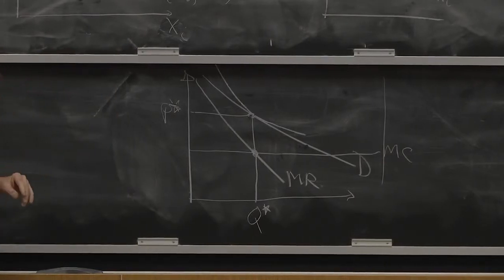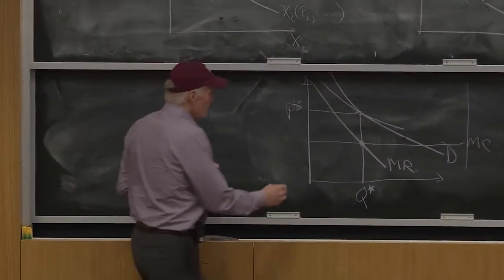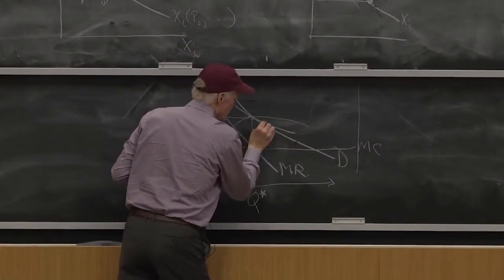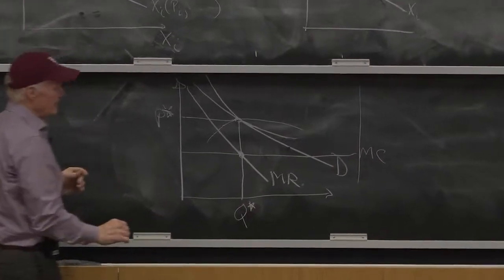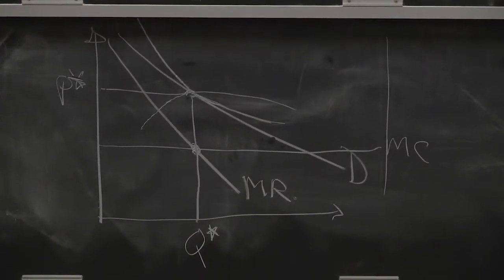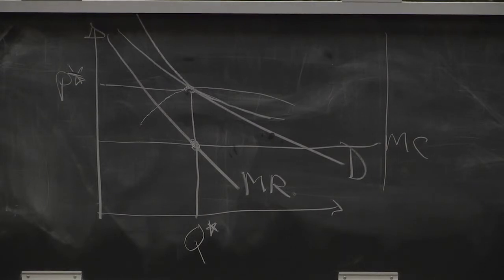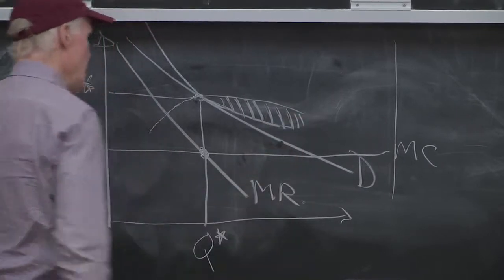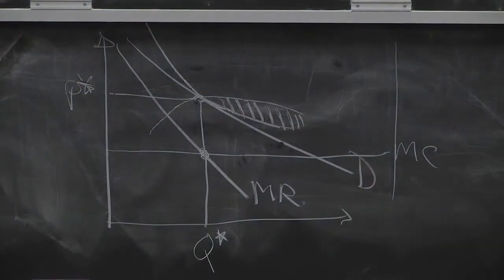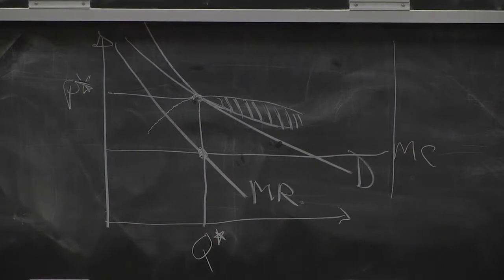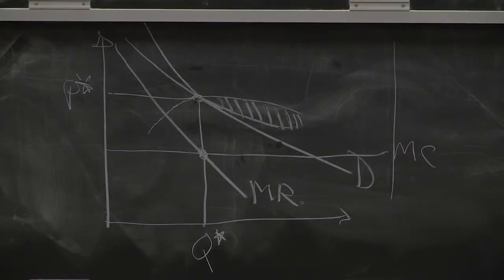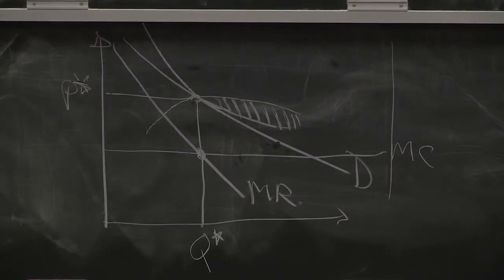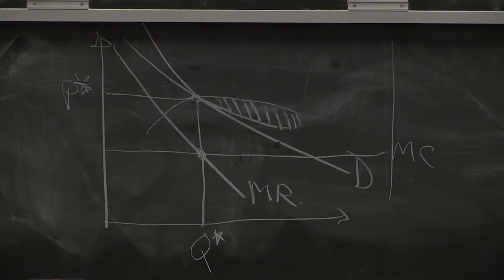So now I've got the consumer's indifference curve and I've got the monopolist's indifference curve. And so there's this region out here. What is that region? How would you characterize that region? It's above the monopolist's indifference curve and below the consumer's indifference curve.